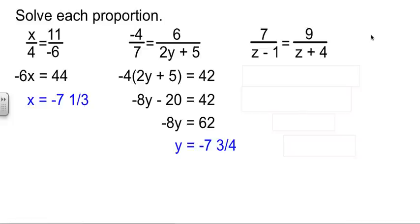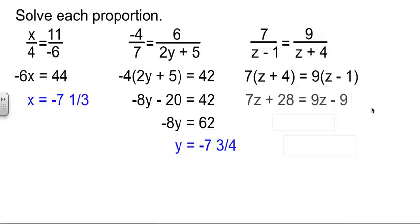One last one of this nature. 7 over Z minus 1 equals 9 over Z plus 4. We'll cross multiply. I'm going to distribute. Now I'm going to move some variables around, subtract the 9Z over, subtract the 28 over, because I'm not scared of negatives, and then do a little division, and I get 18 and a half.